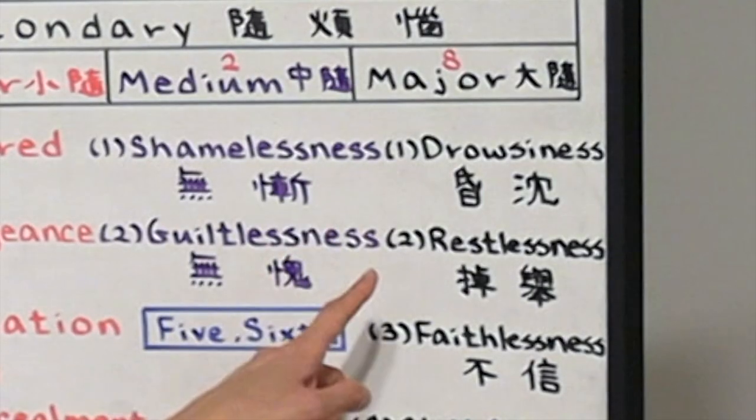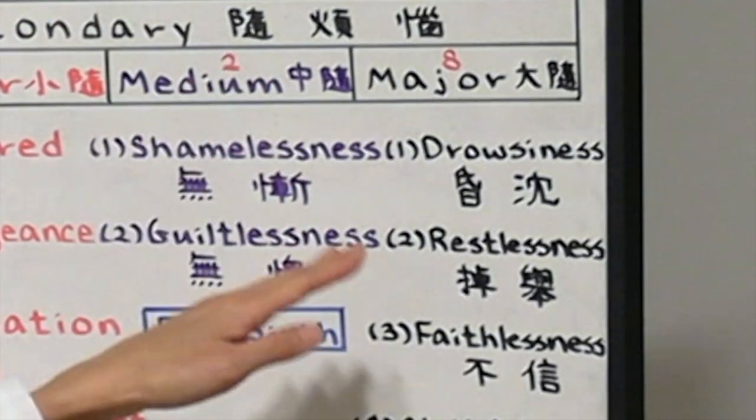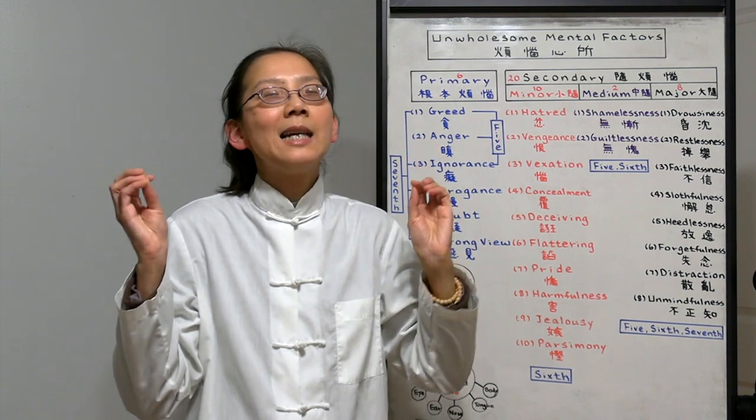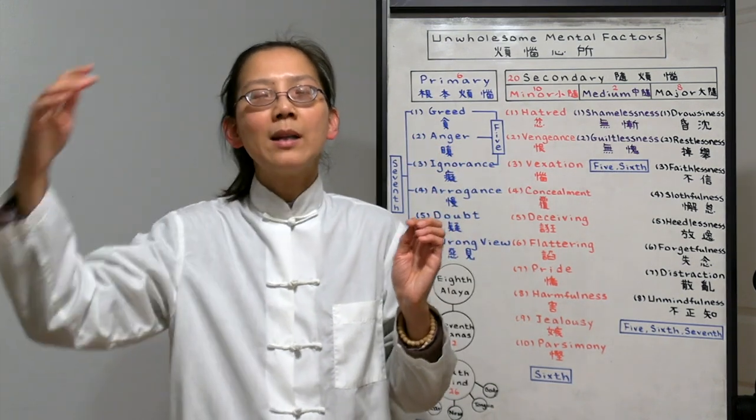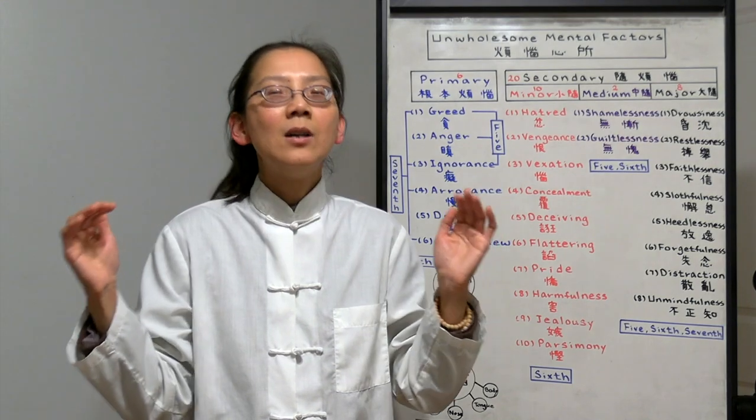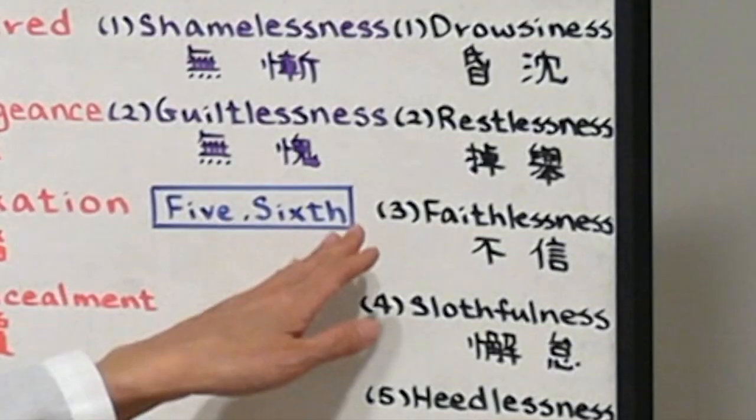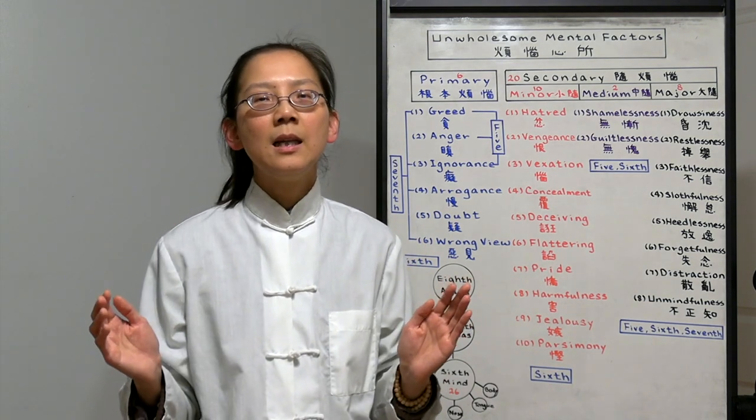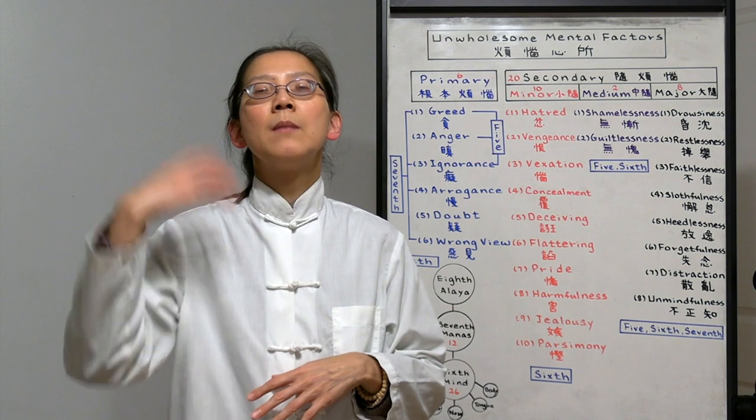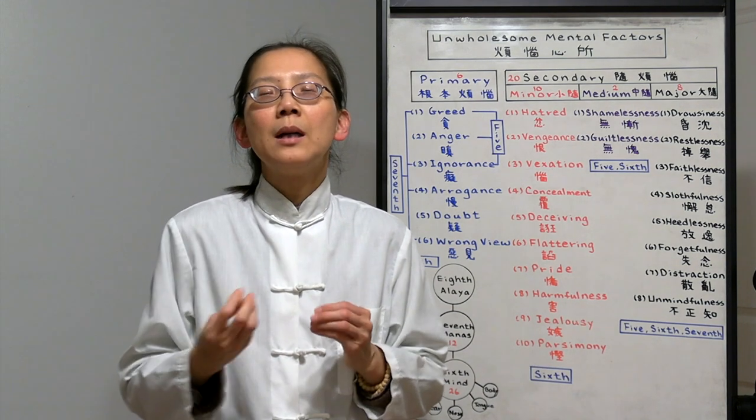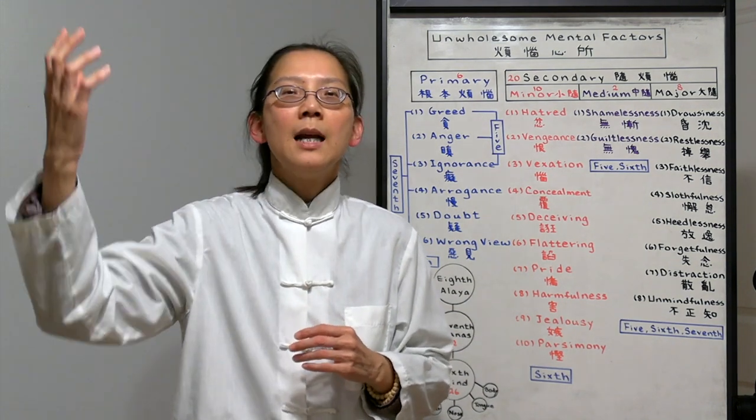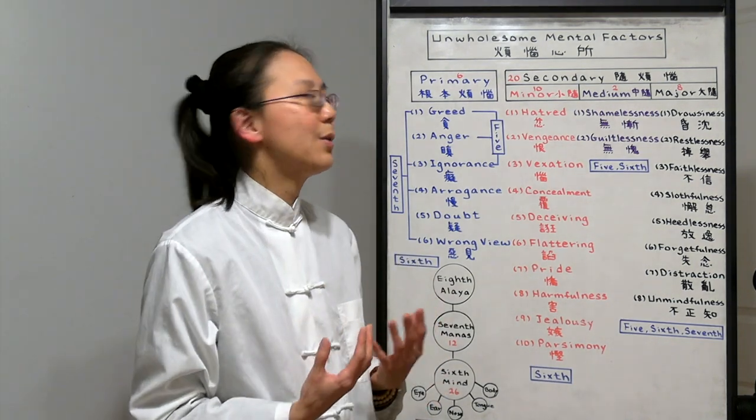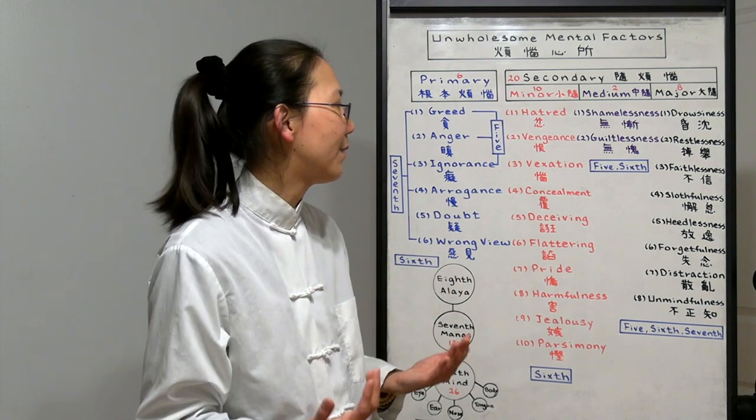Two is restlessness. It's the opposite of drowsiness. When we have a lot of things going on in our mind, we are actually excited. It's having a lot of wondering thoughts. It cannot keep still. It's agitated. Three is faithlessness. When we do not believe in cultivating, in changing our afflictions and becoming wholesome. We do not believe we can reach Buddhahood. And we do not believe we can change our bad habits. When you do not believe you cannot succeed in any of your cultivation.